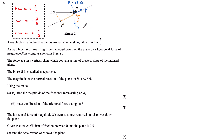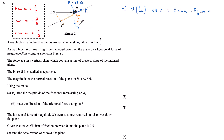Having labelled my diagram with all the forces, I'm ready to start the question. We want to find the magnitude of the frictional force acting on B. I'll start by resolving forces perpendicular to the plane. Because the particle is in equilibrium, all forces acting out of the plane equal all forces acting into the plane. Out of the plane we have reaction force R = 68.6 newtons. Acting into the plane we have X sin alpha plus 5g cos alpha, as the weight component is adjacent to angle alpha.